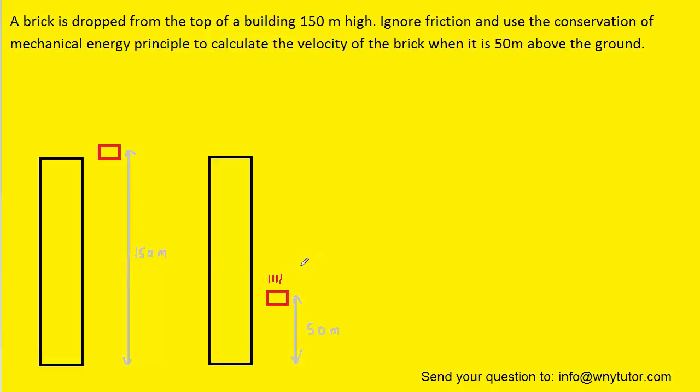And then we're asked to calculate the final velocity of the brick when it is 50 meters above the ground. Notice that the initial velocity of the brick is going to be 0 meters per second since the brick is dropped.